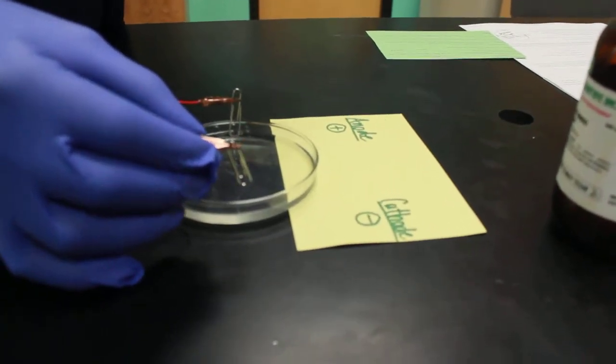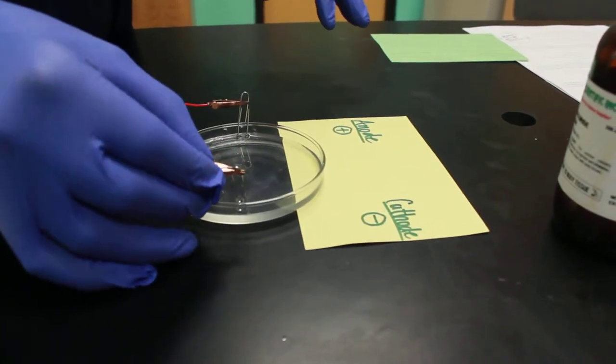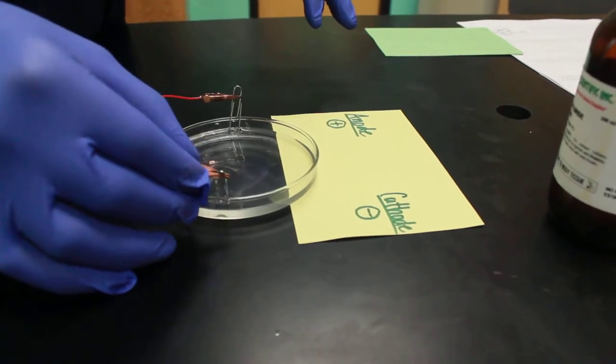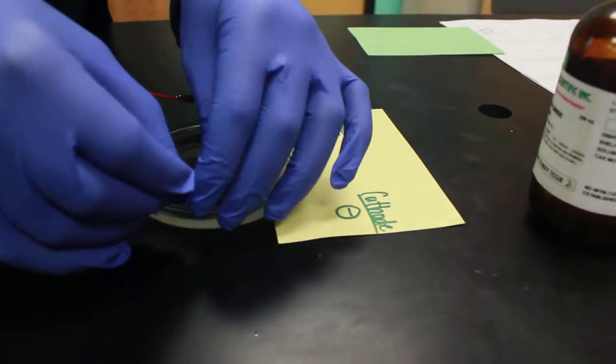Now you're going to take the cathode, which is the negative end, and you're going to put it onto another end of the petri dish.